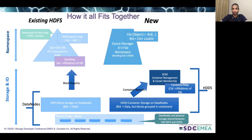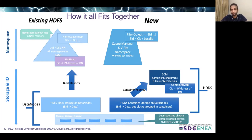Another important aspect of Ozone is that the metadata has been separated into two separate services. Ozone Manager is the namespace manager in Ozone, and Storage Container Manager (SCM) is the container space manager. Data nodes send container reports to SCM, which processes these container reports. SCM also maintains a container map — a mapping of container ID to the set of data nodes which contain the container replica. The size of the container map is on the order of containers rather than blocks, which is a significant reduction in memory usage. Ozone Manager only keeps a working set in RAM, which is also a significant reduction in memory usage.